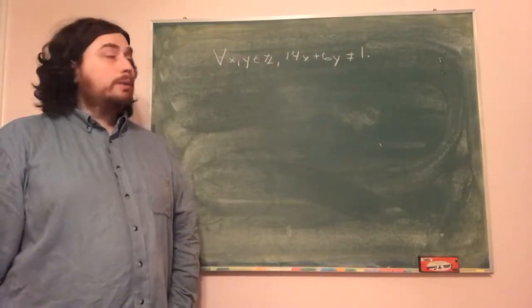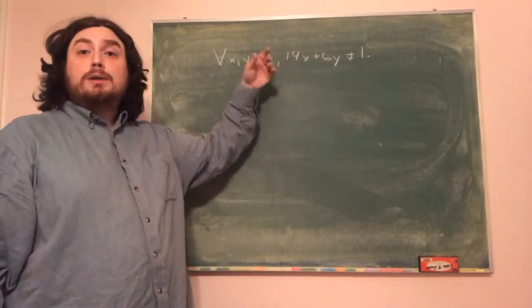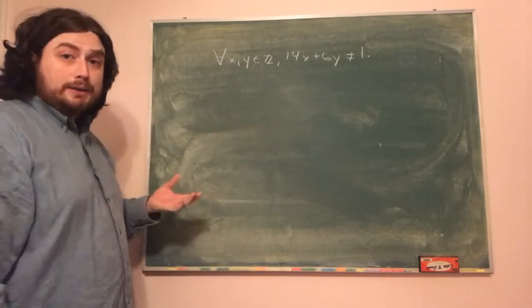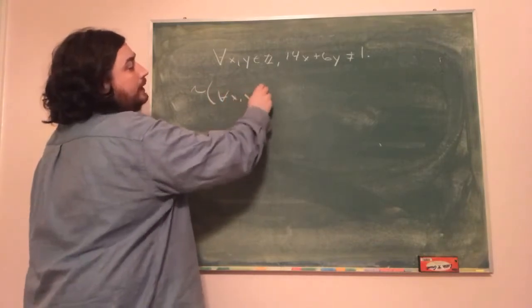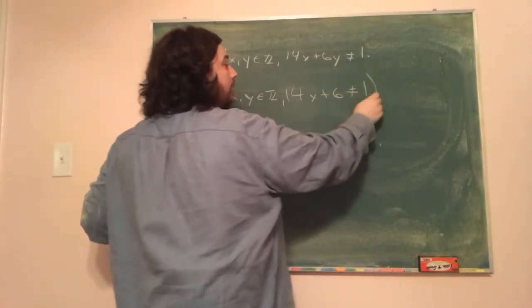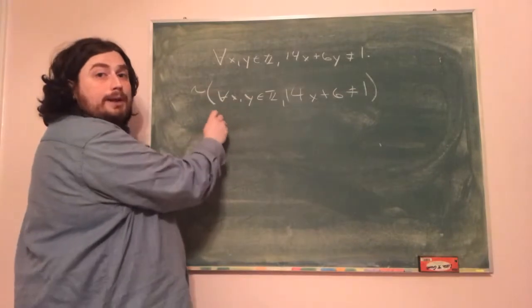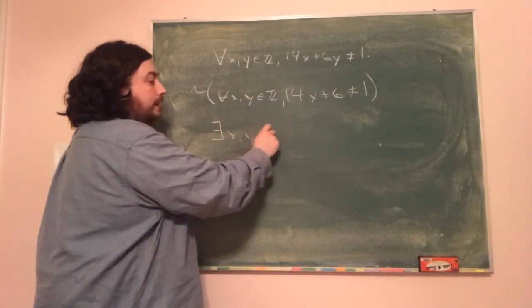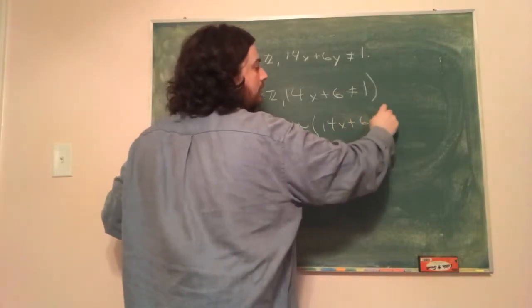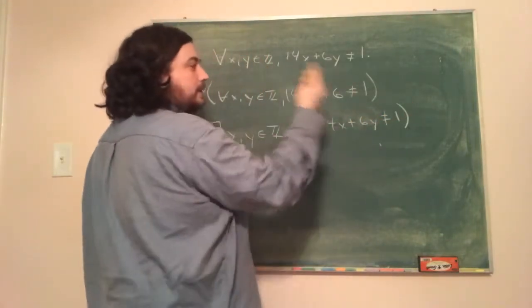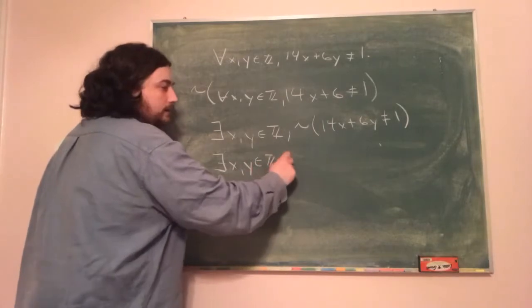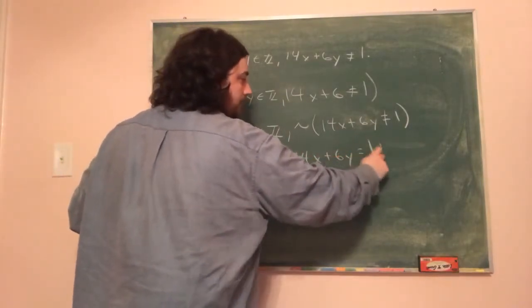Since we're using a proof by contradiction, we want to find the negation of this statement and assume it, then show that leads to some contradiction. The negation of 'for all x and y in Z, 14x plus 6y is not equal to 1' would be: there exists an x and y in Z such that the negation of the rest — that is, 14x plus 6y is equal to 1.